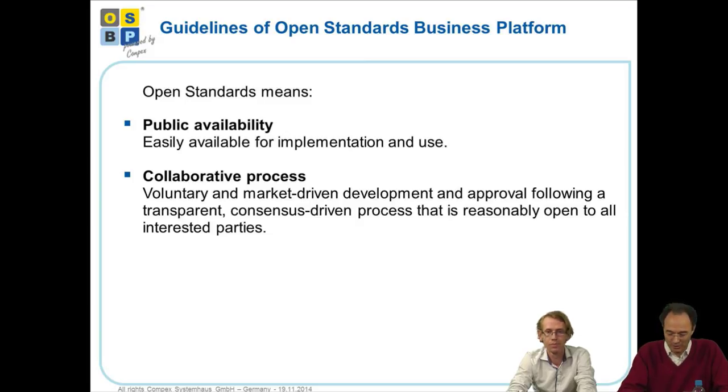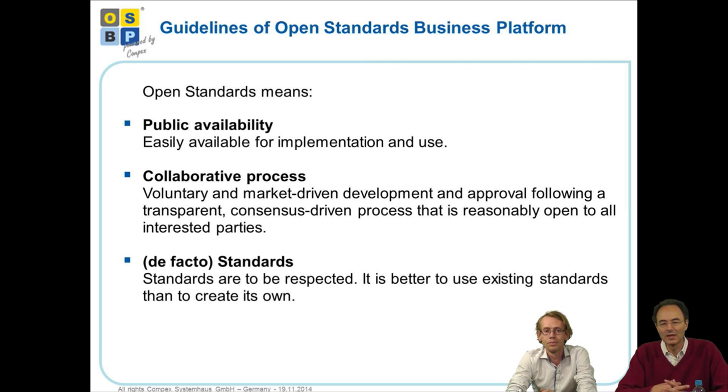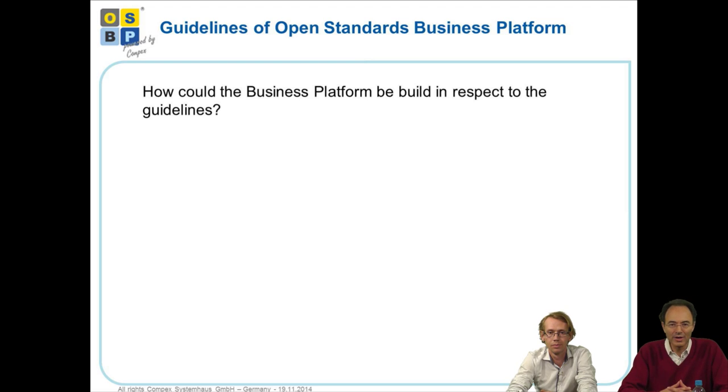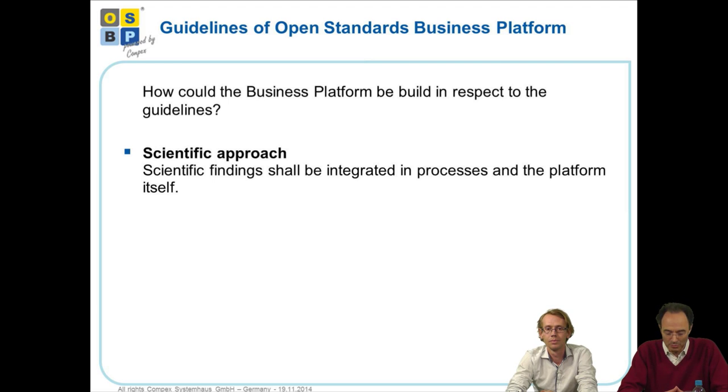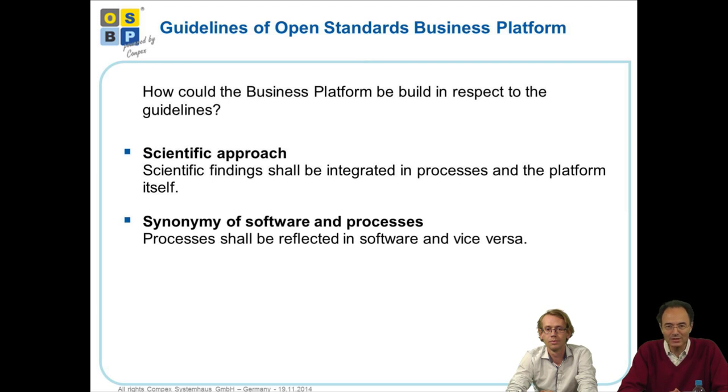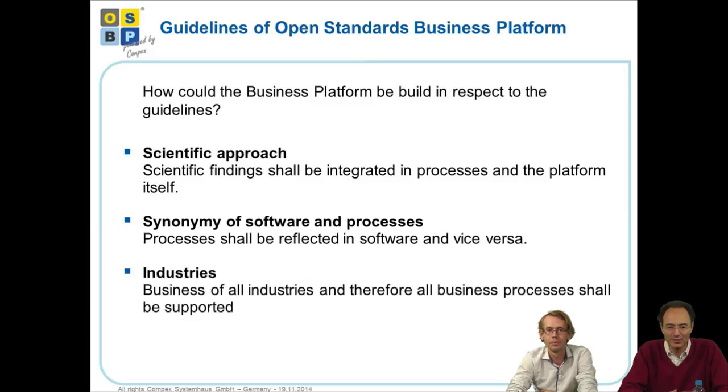The next one is that we are using standards as long as they are already existing on the market. Using standards is better than developing its own standards, at least it's a lot cheaper. The next one is we are collaborating with universities and therefore having a scientific approach. And an important one is also using processes and defining processes to develop software as we think it's synonymous between developing software and having a certain result at the end of this process. And what do we understand under business applications? For us, business applications is any type of software you can use under business conditions.